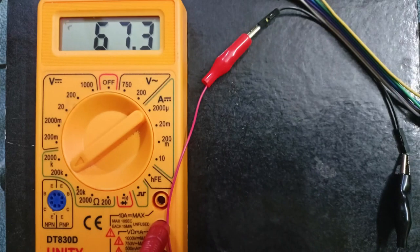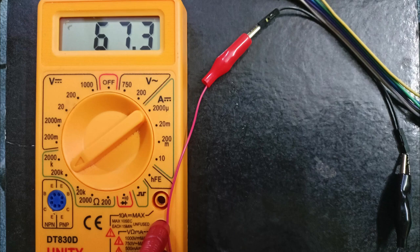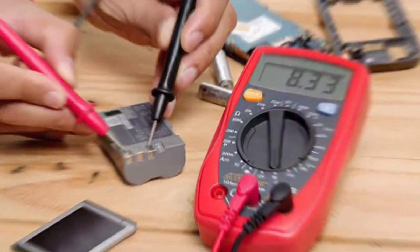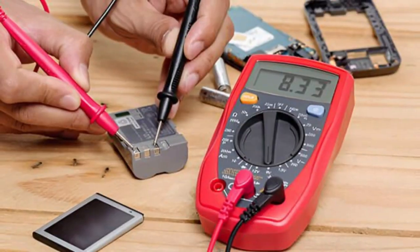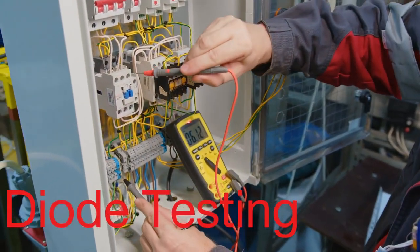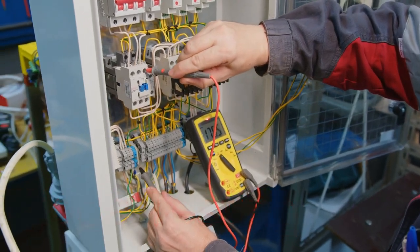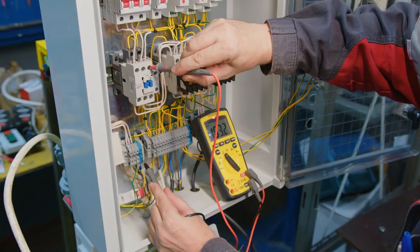Many modern multimeters also come equipped with additional features, such as diode testing, capacitance measurement, frequency measurement, and temperature sensing. Diode testing, for example, allows users to verify if a diode, a component that only allows current to flow in one direction, is functioning properly.